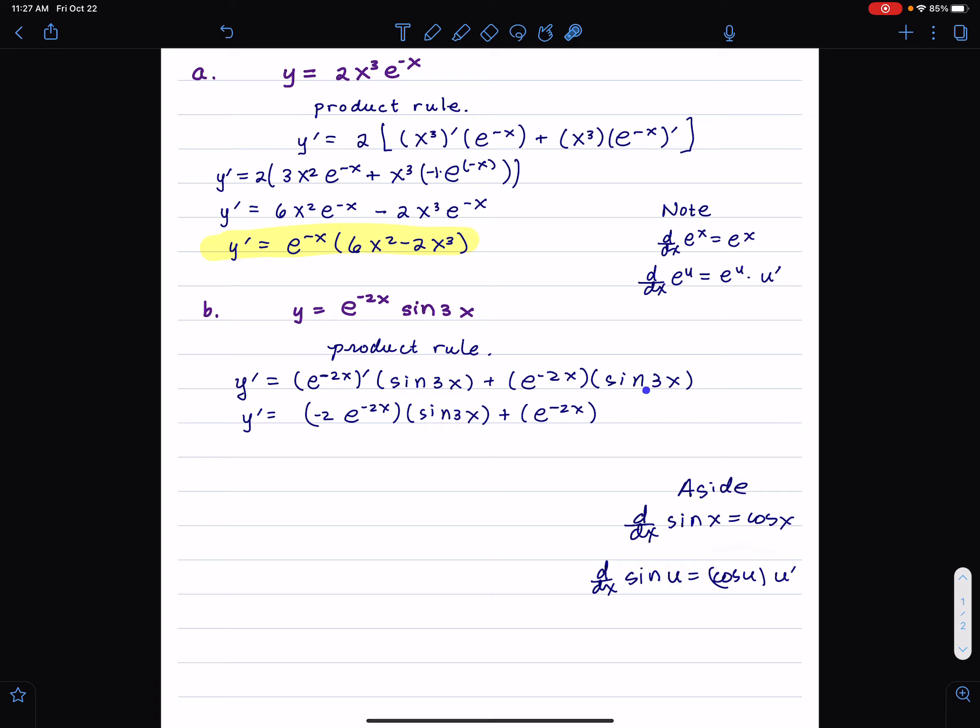In this case, the inside function, the u function, is 3x. The derivative of 3x is 3. So, this is going to be the derivative of sine u. You could even, for the moment, ignore what's inside. Derivative of sine u is cosine u. So we write cosine u, which is cosine 3x, times the derivative of what's inside. The derivative of u, which is 3.